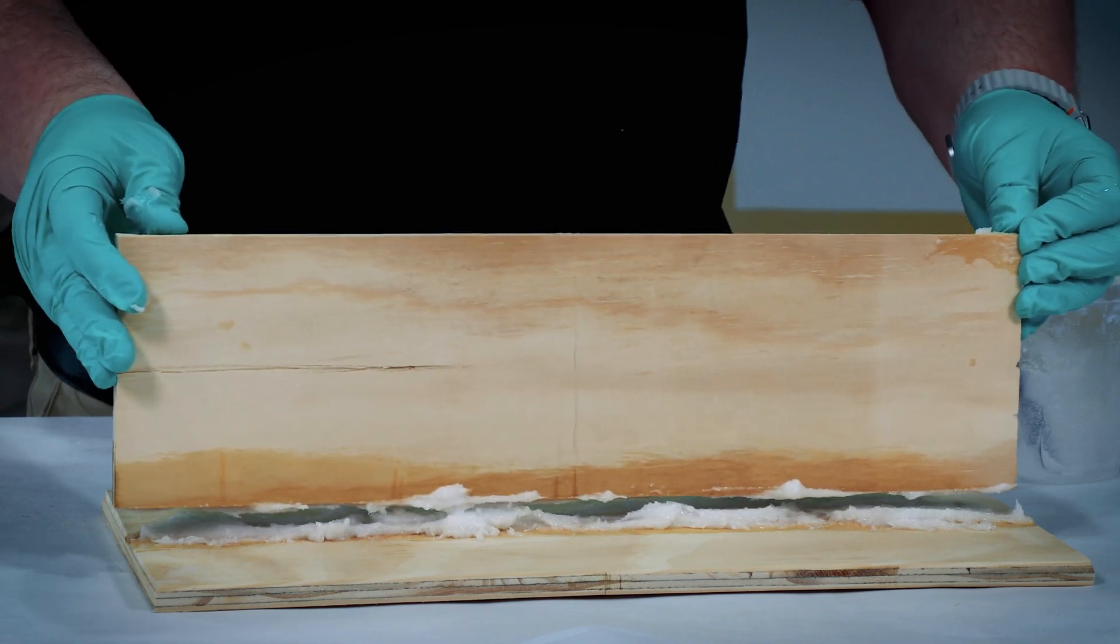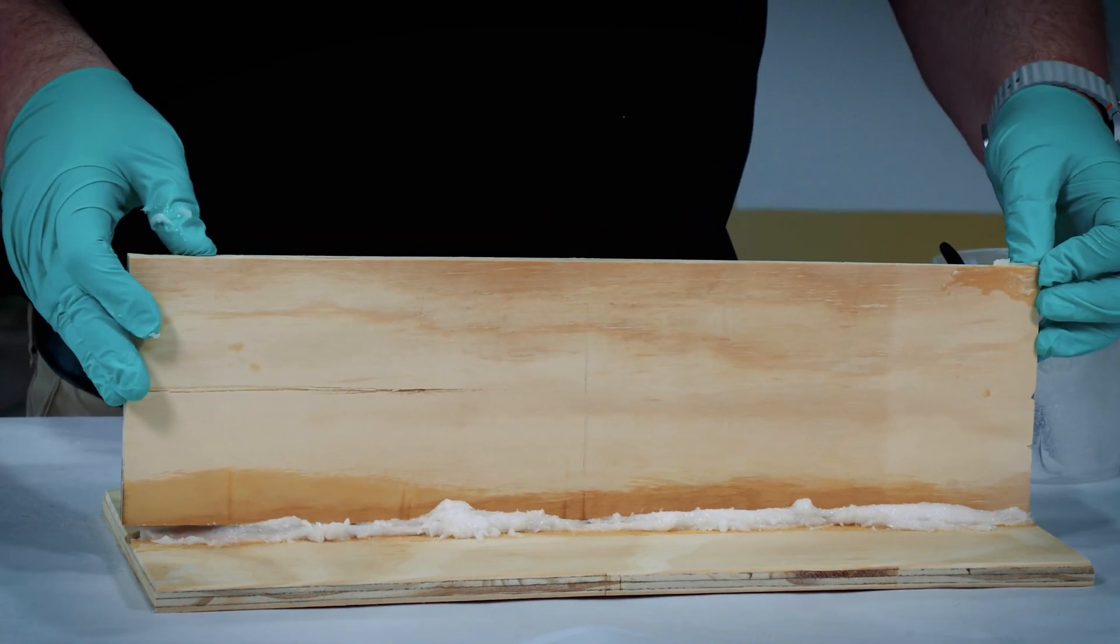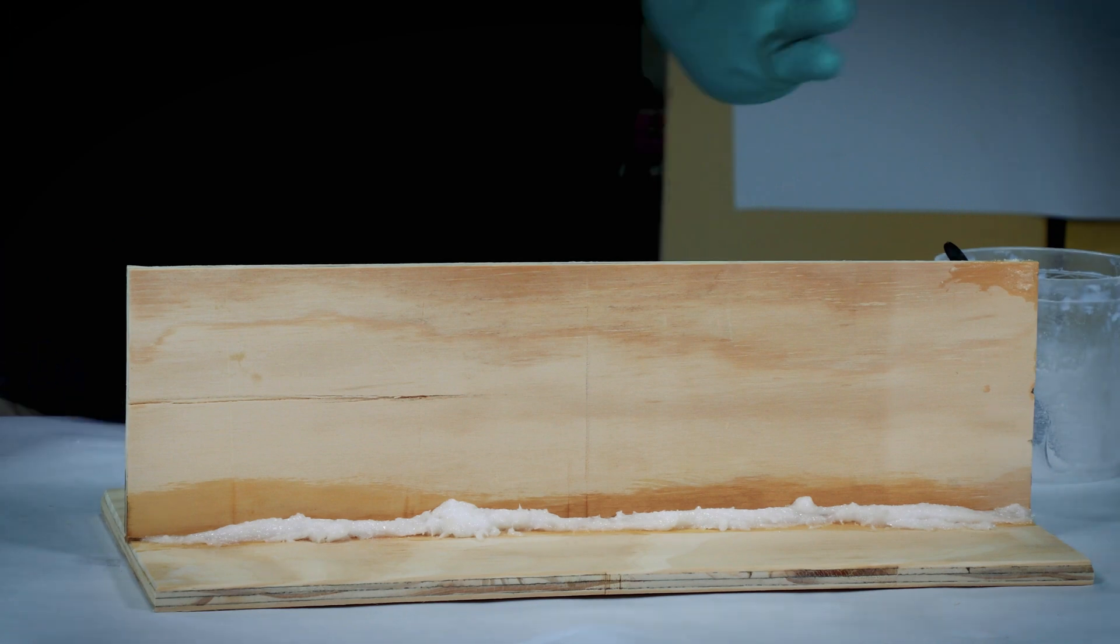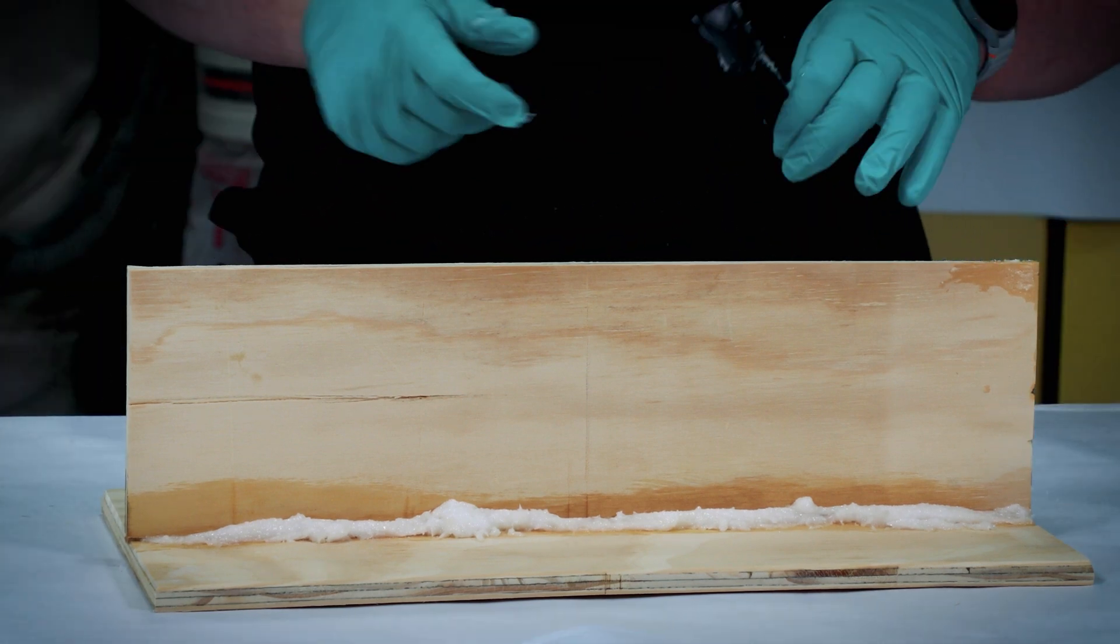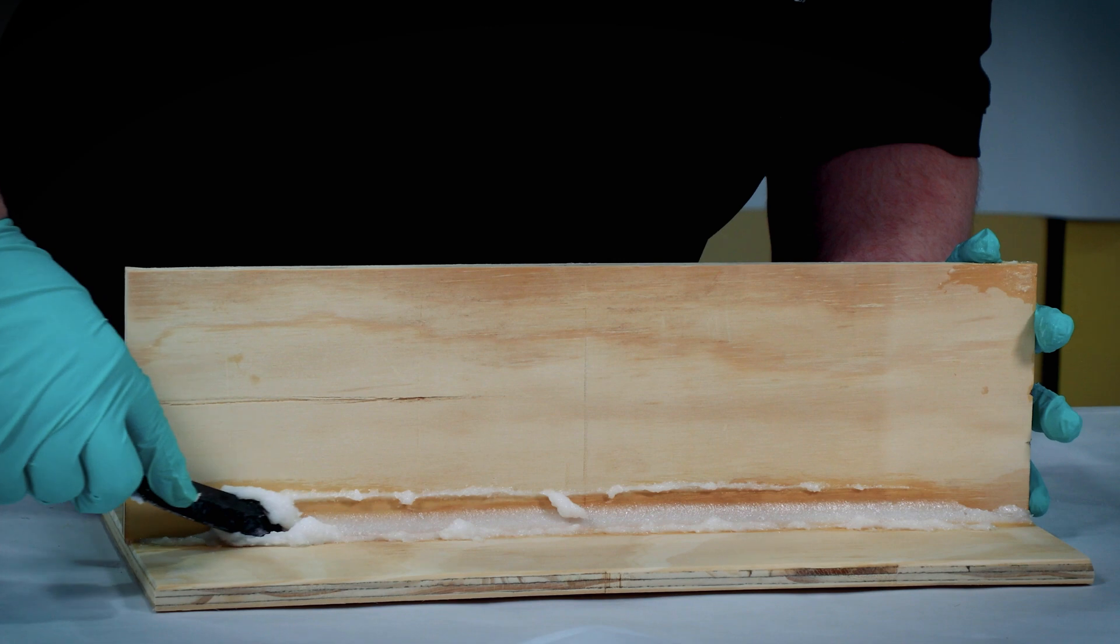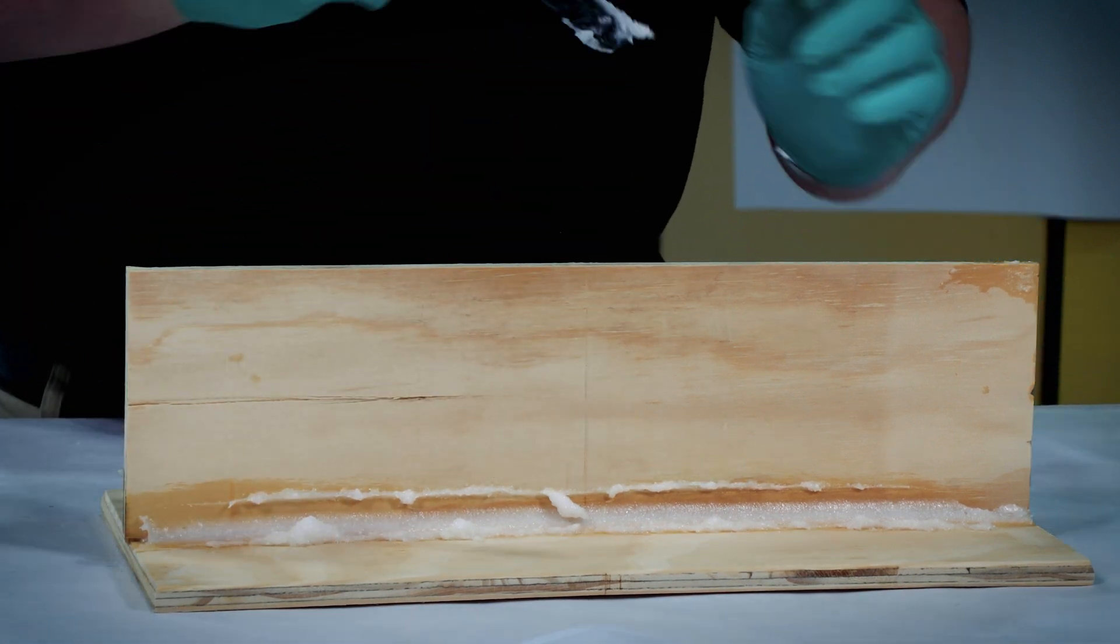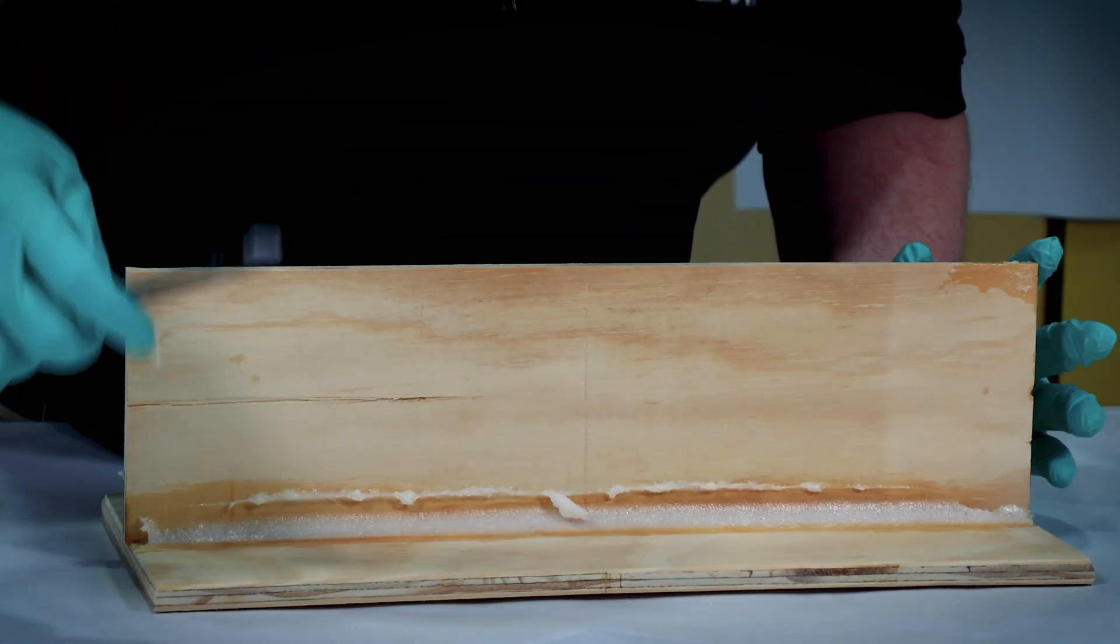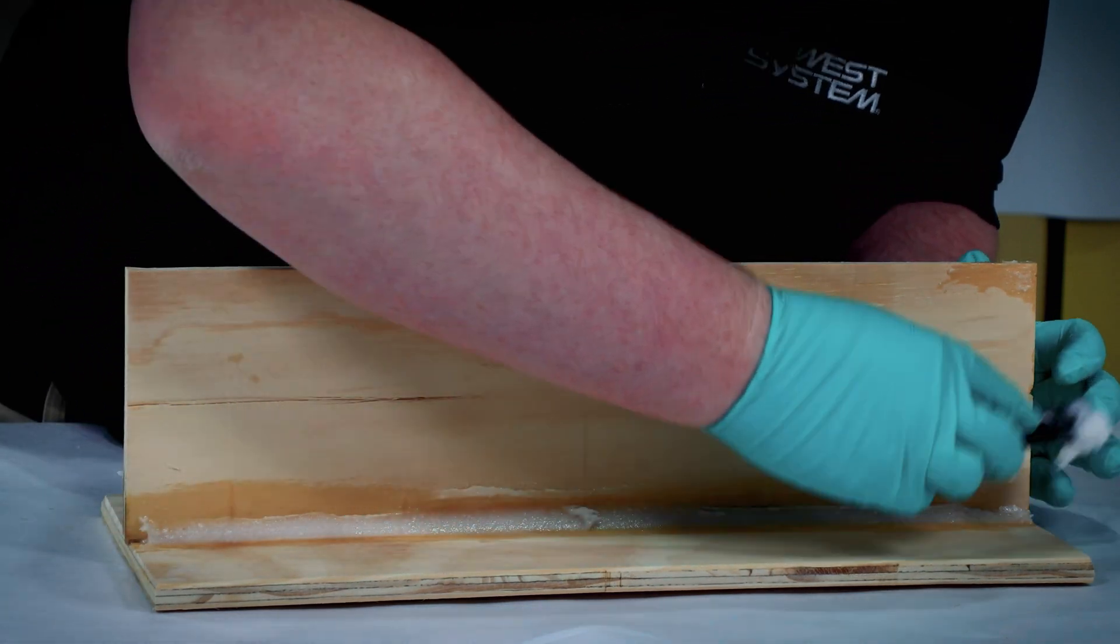As we take it, we'll embed that down into the epoxy, pressing nice and firm but not too much. We're just doing a small fillet on this side, so we'll take the back of our mixing stick and just run it across. Use the other side to scrape up any excess we've got on both the top and the bottom.